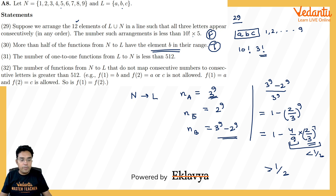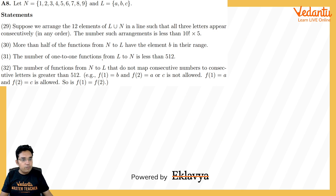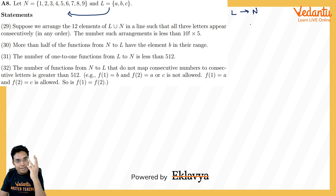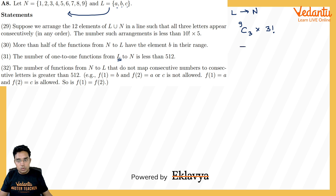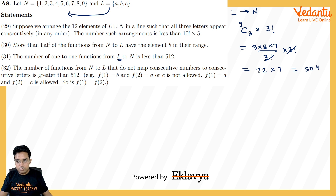Part 31: number of one-to-one functions from L to N. We choose 3 images from 9 in C(9,3) ways, then assign them to a, b, c in 3! ways. Total: C(9,3)·3! = 84·6 = 504. Since 504 < 512 = 2⁹, the claim that this count is less than 512 is true.